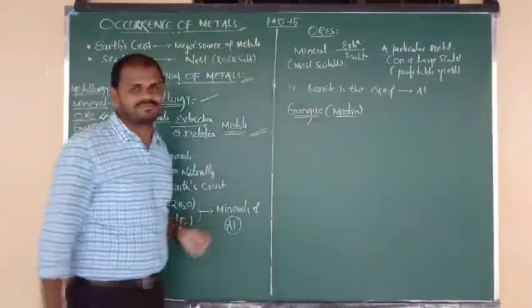So metallurgy definition: separation, purification, extraction, and isolation of metals from their respective minerals and ores — such a procedure is known as metallurgy. Now let's go to the next definition.